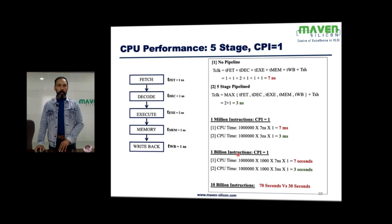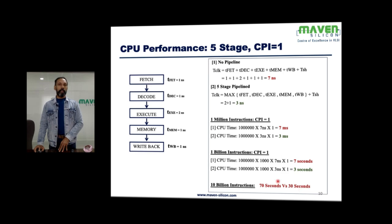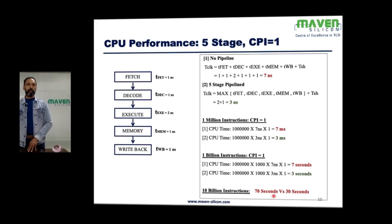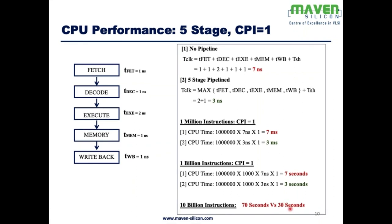If we consider 10 billion instructions — for example, on a cloud server — the comparison becomes 70 seconds for the regular processor versus 30 seconds for the five-stage pipeline processor. So both clock frequency and CPI have a huge impact on CPU runtime.